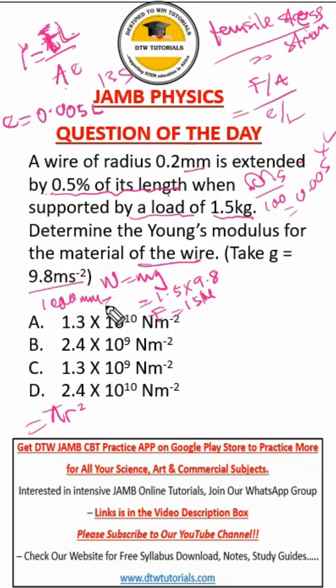1,000 millimeter makes 1 meter. Please, all this short conversion, please make sure you know it. So to convert this to meter, we have to divide by 1,000. So 0.2 divided by 1,000. Or better still, let's just convert to standard form.